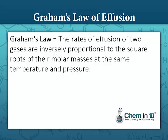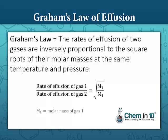In other words, the rate of effusion of gas one divided by the rate of effusion of gas two is equal to the square root of the molar mass of gas two divided by the molar mass of gas one. In a more qualitative way, we can say that the lighter gas will have a greater speed, a greater rate of effusion than a heavier gas.